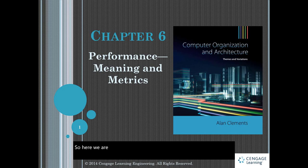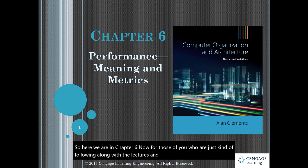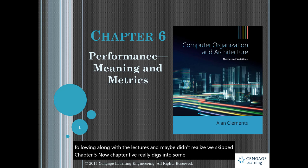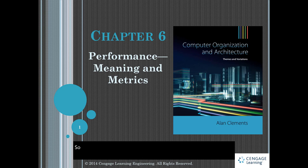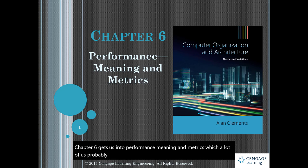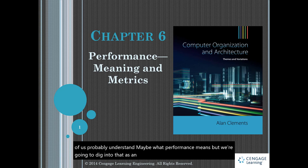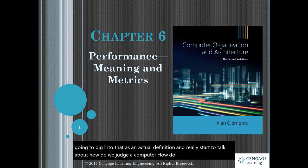So here we are in chapter 6. For those of you who are just following along with the lectures and maybe didn't realize, we skipped chapter 5. Chapter 5 really digs into some more advanced topics of computer architecture and multimedia, which is an extremely math-intensive topic. So chapter 6 gets us into performance, meaning and metrics. A lot of us probably understand what performance means, but we're going to dig into that as an actual definition and really start to talk about how do we judge a computer, how do we decide if a computer is fast enough or faster than another, and compare computers to each other.